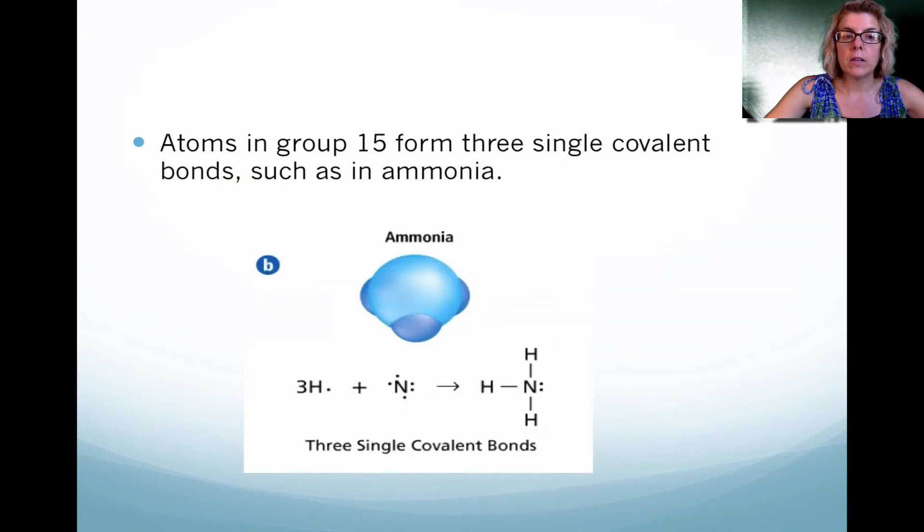Group 15, the third column over, they form three covalent bonds. Notice in nitrogen, it's got space for three more valence electrons. As a result, it will form a covalent bond with another atom to give it that octet or that eighth set of electrons.